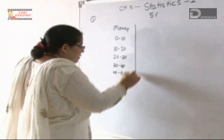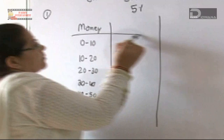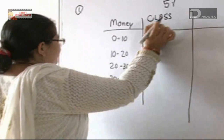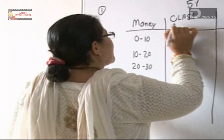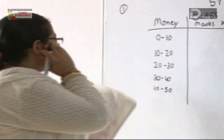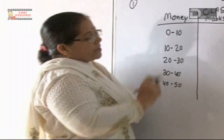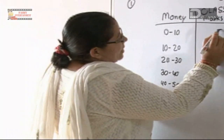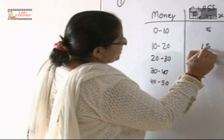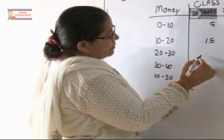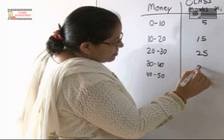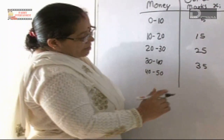Now we calculate the class marks, labeled as x. For each interval, we add the lower limit and upper limit and divide by 2. So: 0+10=10, divided by 2 gives 5. 10+20=30, divided by 2 gives 15. 20+30=50, divided by 2 gives 25. 30+40=70, divided by 2 gives 35. 40+50=90, divided by 2 gives 45.